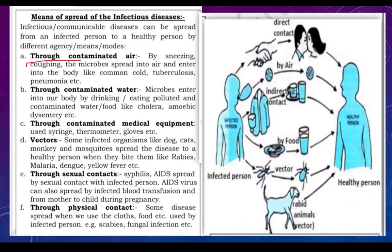Through contaminated air — by sneezing and coughing, microbes spread and result in the common cold, tuberculosis, and pneumonia. Through contaminated water — microbes enter our body by drinking or eating polluted or contaminated water, resulting in cholera and amoebic dysentery.